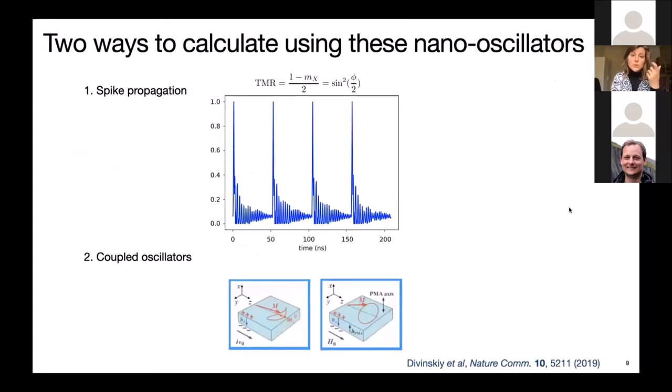So now we want to propose two ways to use these spin hole oscillators for neuromorphic computing. We want to realize them in chains of nano constrictions, and then we can either use spike propagation in these chains, similarly to what biological neurons do, or alternatively, we could use them in the regime of continuous oscillations and tune the coupling between the oscillators.